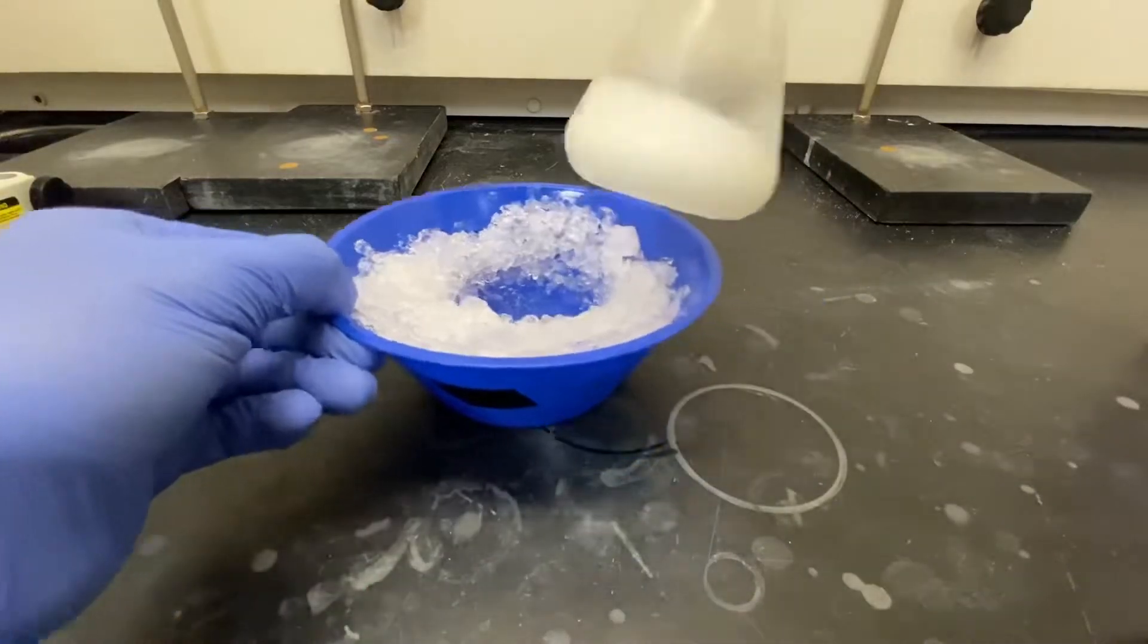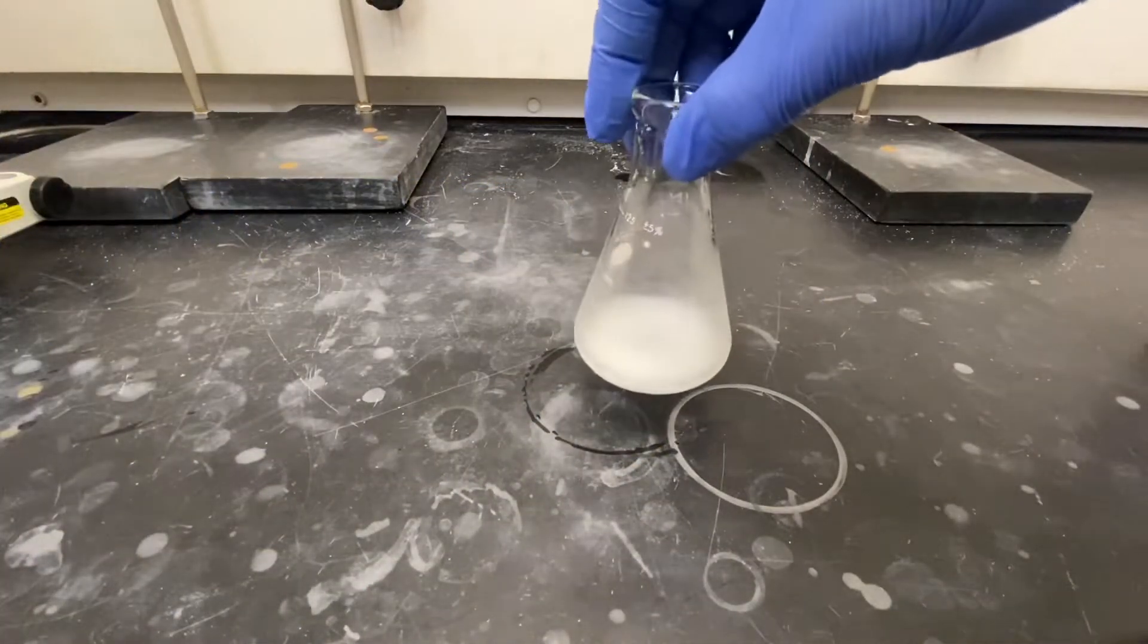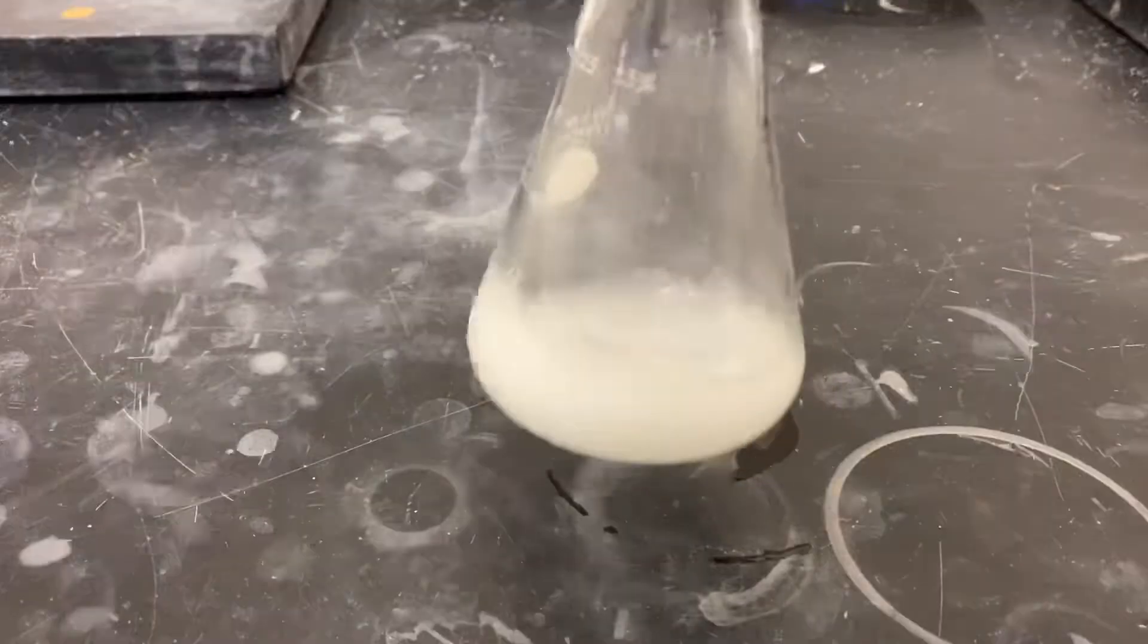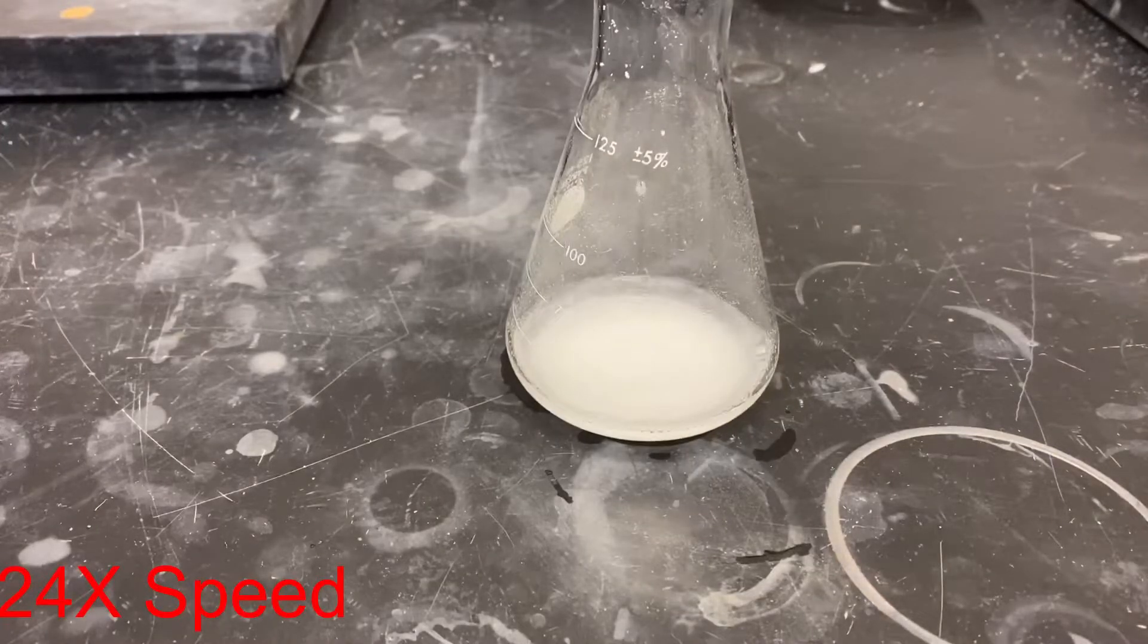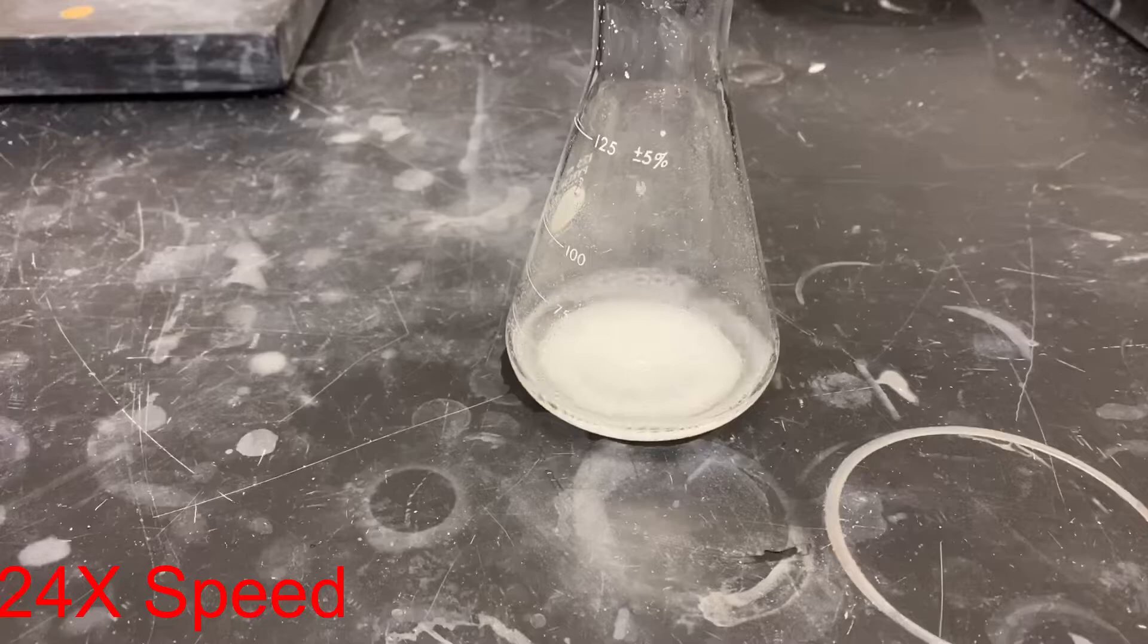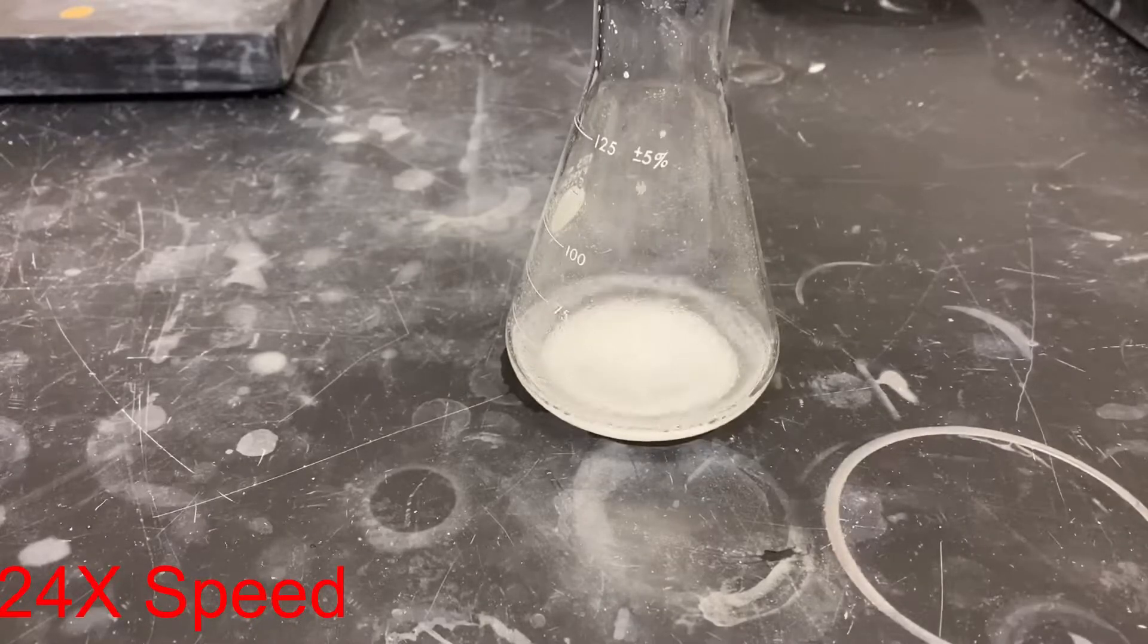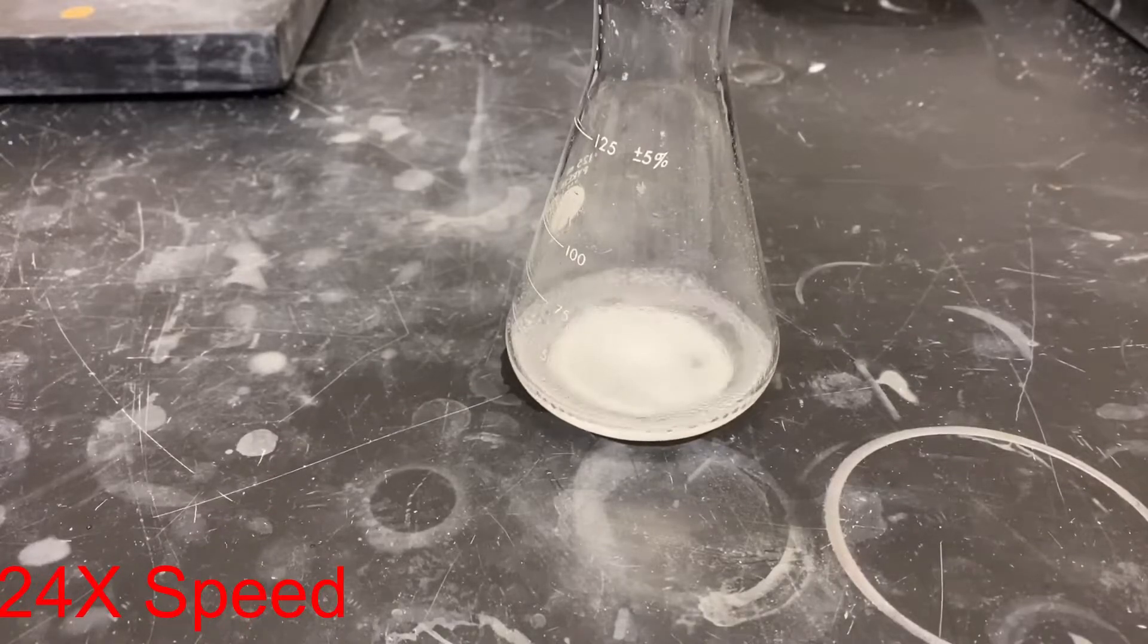After all sodium borohydride is added to the chalcone mixture, remove the Erlenmeyer flask from the ice bath and let the mixture warm to room temperature while it is reacting. While it is warming up, swirl the Erlenmeyer flask to mix from time to time. During the reaction, bubbling in the mixture was observed due to the generation of hydrogen gas.